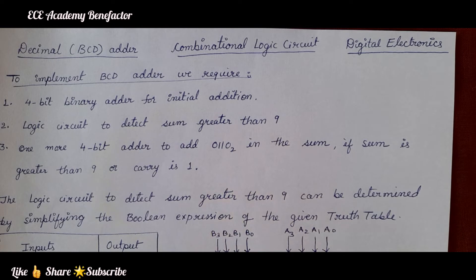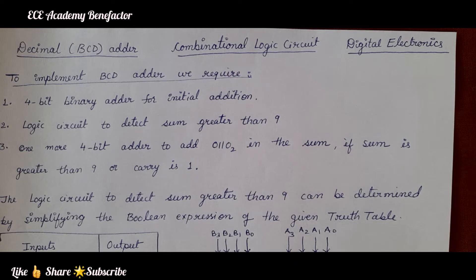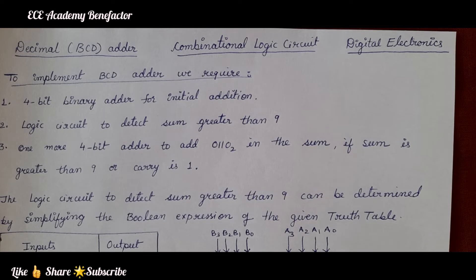Let us start. To implement a BCD adder, we require three steps. What is a BCD adder? When the sum is greater than 9, or if any carry is generated, we have to add 6, which is 0110 in binary. This is the BCD addition we will perform. While adding two binary numbers A and B, if the sum is greater than 9 or if a carry is generated, we need to add 0110 to the sum to get the accurate BCD sum.